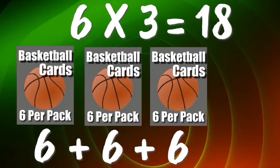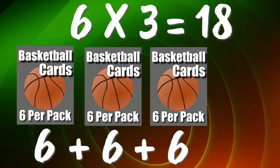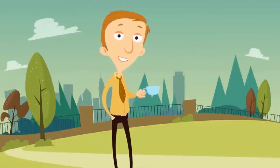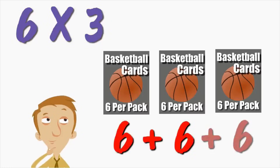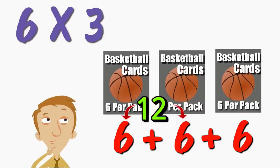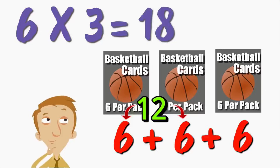I'm getting a total of 18 cards. We can double check that: six times three means we have the number six three times, which is the same as six plus six plus six. Six plus six equals twelve, and twelve plus one more six is eighteen. Six times three equals 18.